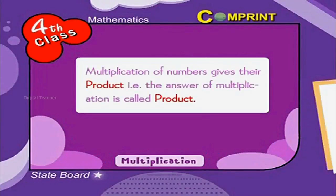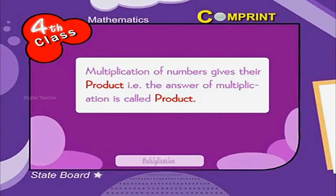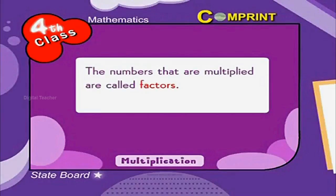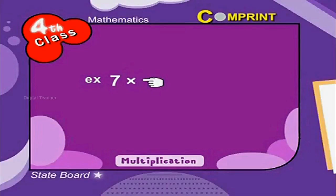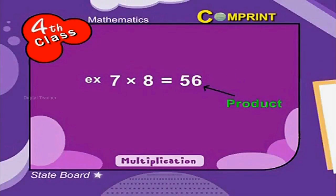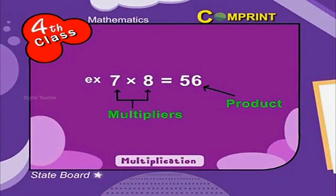Multiplication of numbers gives their product. That is, the answer of multiplication is called product. The numbers that are multiplied are called factors. For example, 7 into 8 is equal to 56. 56 is the answer, that is the product. 7 and 8 are the multipliers, that is, factors.